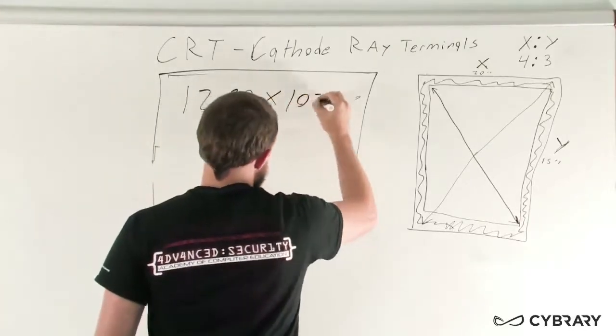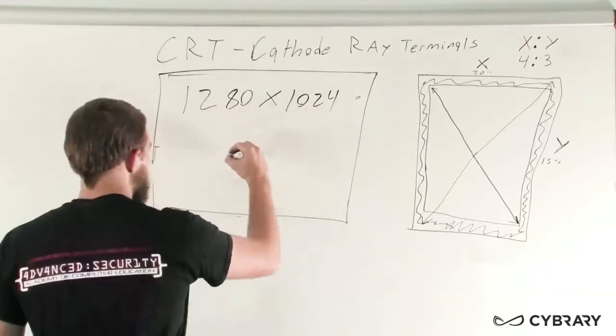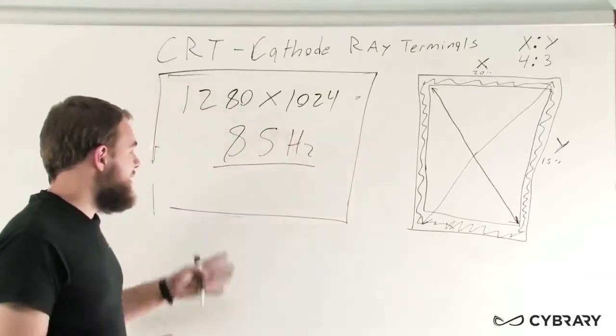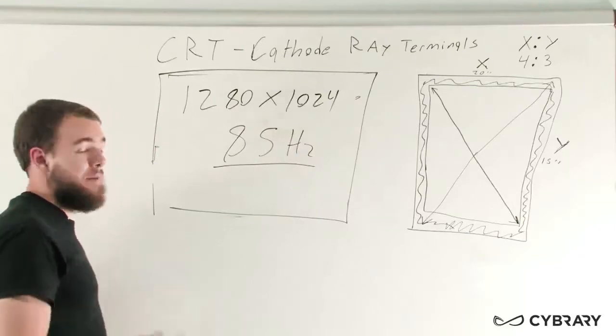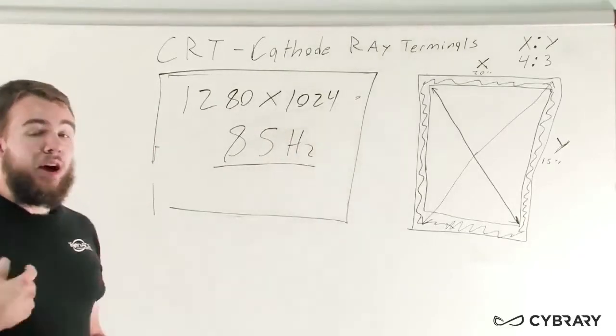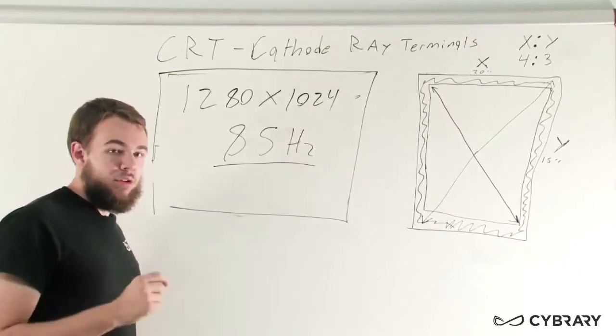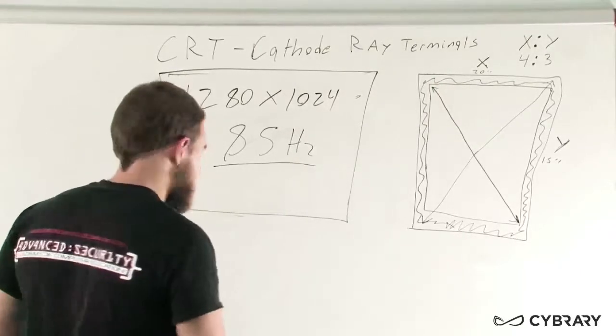Our monitor that is 1280 by 1024, we recommend a refresh rate of 85 hertz. One of the last aspects of a CRT monitor that we want to discuss is going to be color depth. Now color depth is the number of bits used to describe a pixel color.